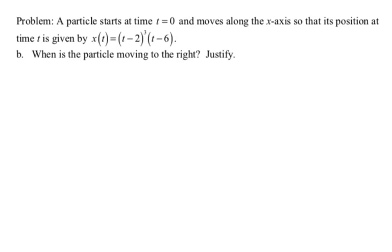So we want to know when is the particle moving to the right, and we want to justify. So I'm going to borrow the velocity that we found in the last part. And I'm going to actually just make a sign chart for it. So it's v, I'm putting 2 and 5 because those are the zeros of velocity. And then I'm also going to put zero because the problem says we start at time t equals zero.